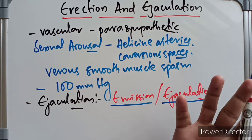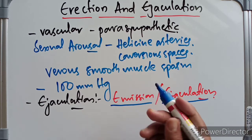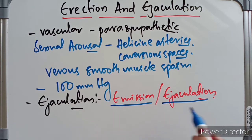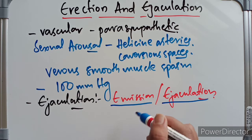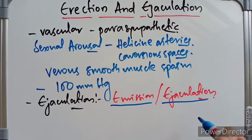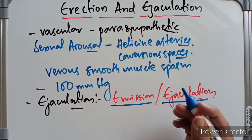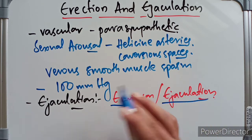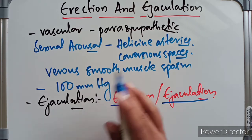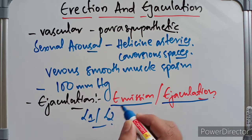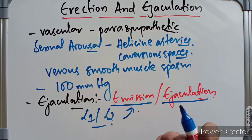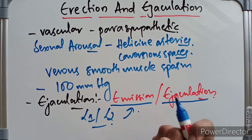Emission involves secretions from the prostatic gland, seminal vesicles, and bulbourethral glands. Ejaculation is the expulsion of sperm along with seminal fluid — called semen — to the exterior. The sympathetic outflow from the L1 and L2 spinal segments leads to emission by causing constriction of the smooth muscle of the vas deferens and seminal vesicles.